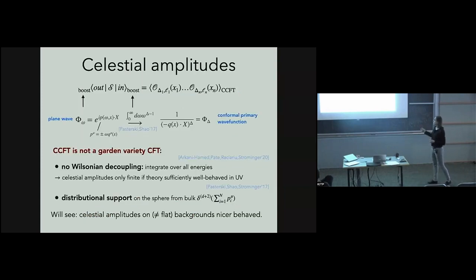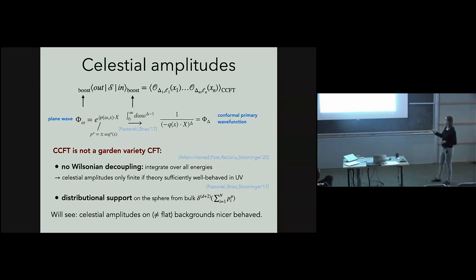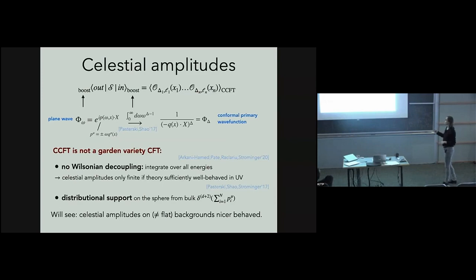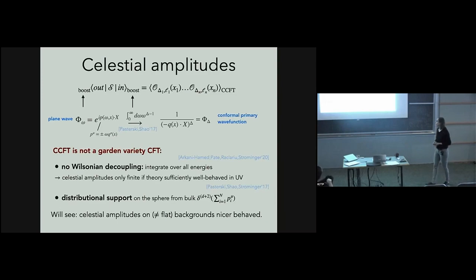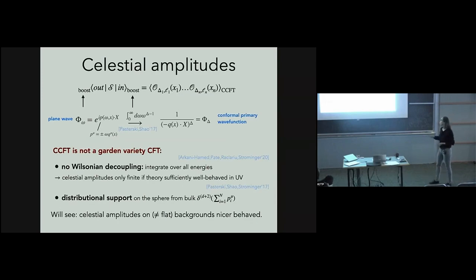To be more explicit about the S-matrix in the boost basis: we put in plane waves as asymptotic states, parameterizing the massless scalar plane wave momentum in terms of energy omega and a null vector Q pointing toward the celestial sphere. The Mellin transform produces a new wave function that transforms under the global conformal group as a conformal primary. This trades the basis of plane waves for a basis of conformal primary wave functions, yielding a correlation function on the celestial sphere labeled by conformal dimensions and spin.